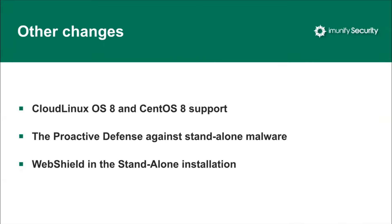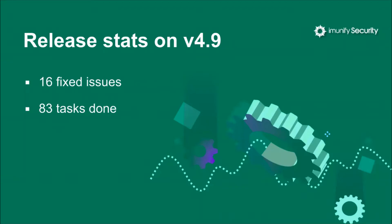In addition to the listed items, we've implemented CloudLinux OS 8 and CentOS 8 support, and added the ability to block standalone malware in the proactive defense based on the malware scanner output. Also, the web shield is now available in the standalone installation of Immunify 360. Overall, we've implemented 83 tasks and fixed 16 issues. That was a quick overview of version 4.9.